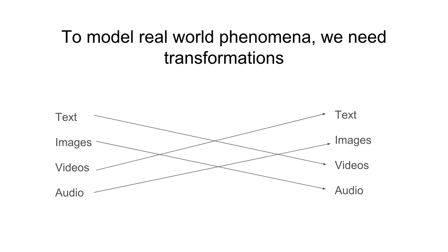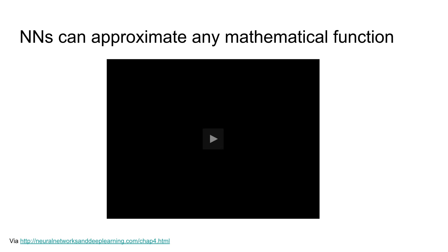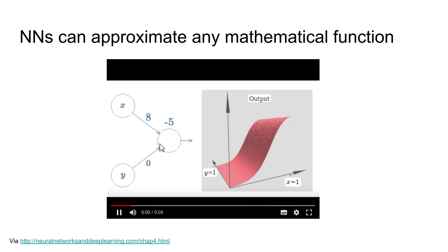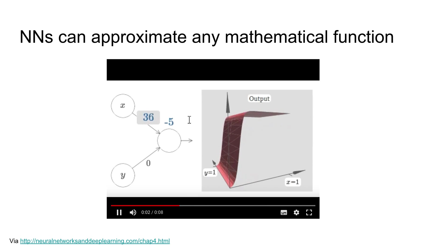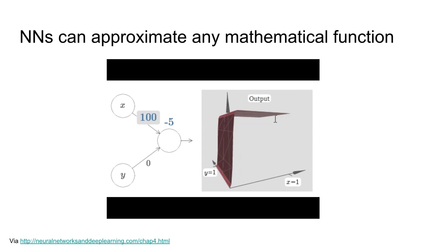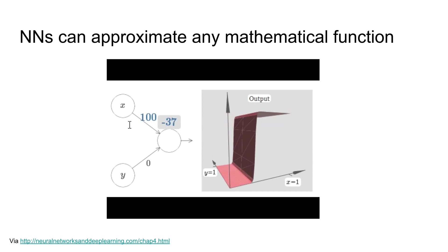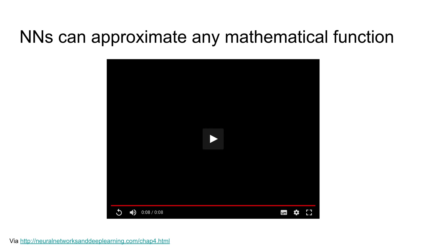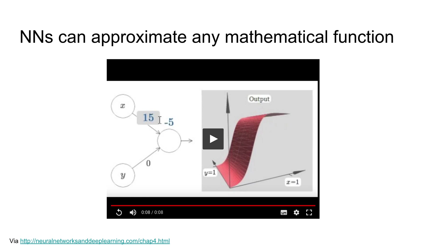For example, we saw in the first example you input an image and it was outputting text. Other neural networks are doing these transformations, and mathematically a transformation is nothing but a function which takes an input and gives an output. The universal approximation theorem of a neural network says that these neural networks can approximate any function.